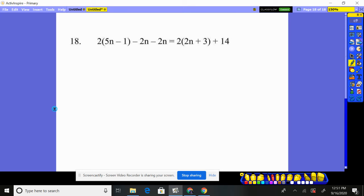18. Final problem here. We have to do some distribution, a little distributing here, and then we'll have to distribute through the parentheses here. So let's do that. Two times five n, 10 n. Two times that one, two. Minus a two n, minus a two n equals. Now, let's distribute on this side. Two times two n's, four n. Two times three is six. And then we have 14.